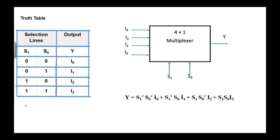Now we are going to design a 4-by-1 multiplexer. We have 2 select lines, S1 and S0. In the truth table, we list the states of these select lines. They are: 0,0 then 0,1 then 1,0 then 1,1.